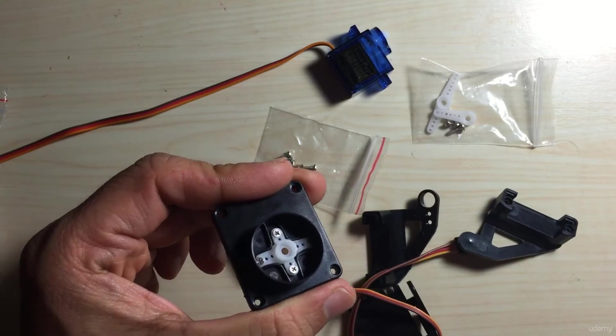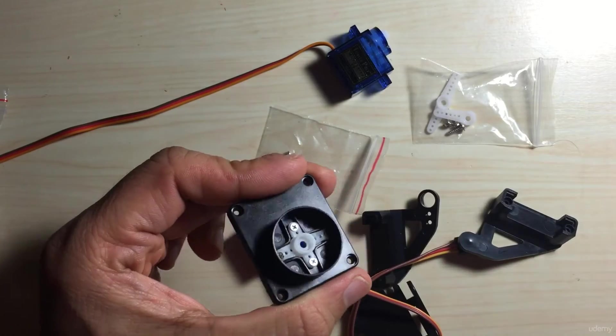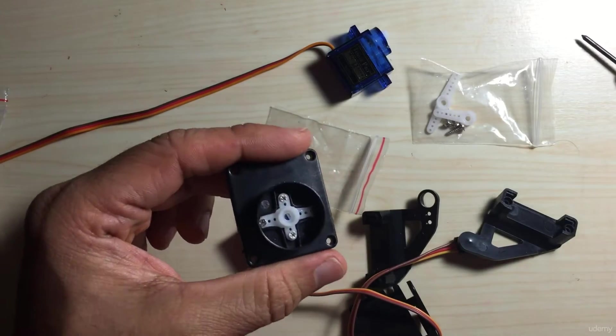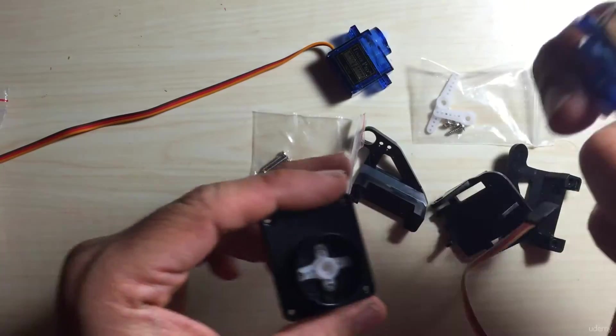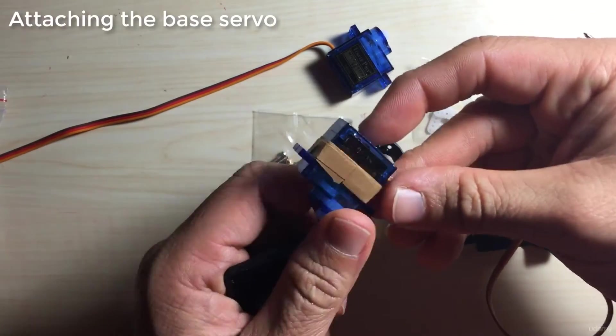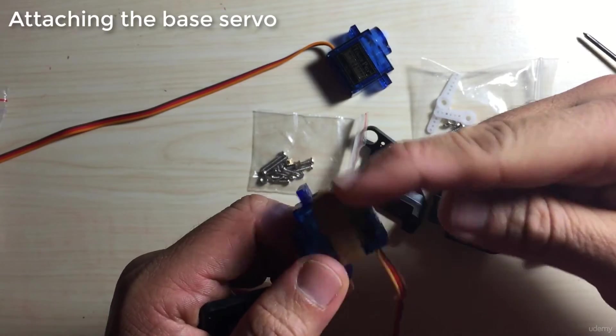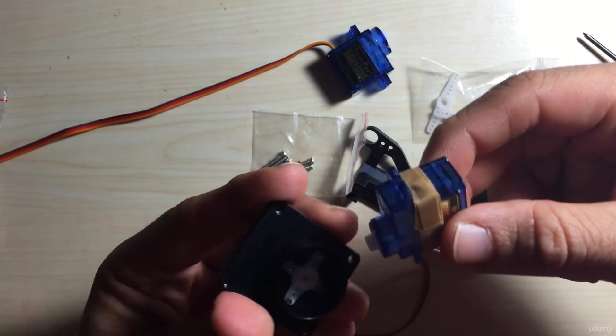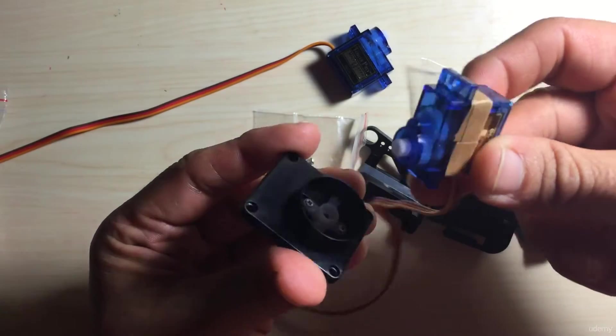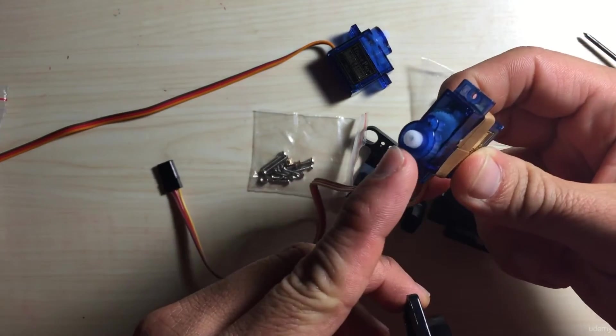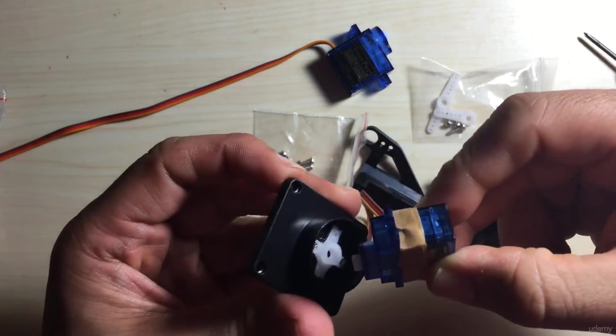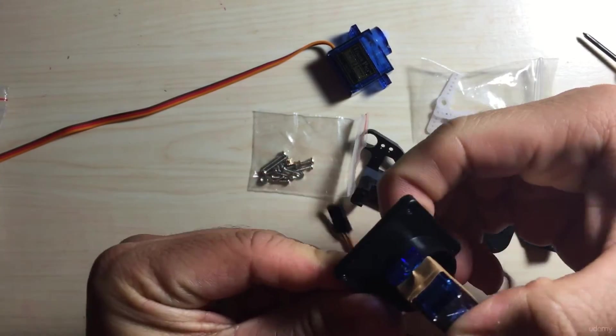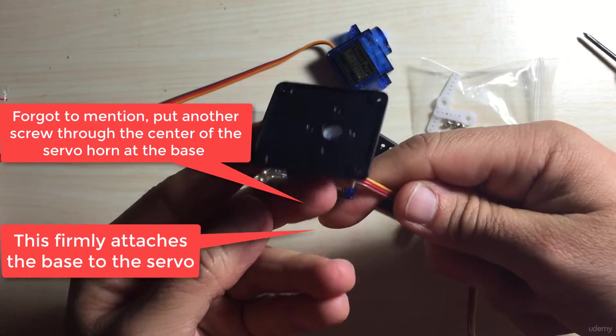All right so next we'll take one of the servos and what I've done is I've just put some tape around this servo just to make it fit a little more snugly in place. You're gonna take the actual end of the servo and you're gonna push that into the servo horn. Make sure it's in place and now that's securely connected so that is the base of our pan tilt swivel.